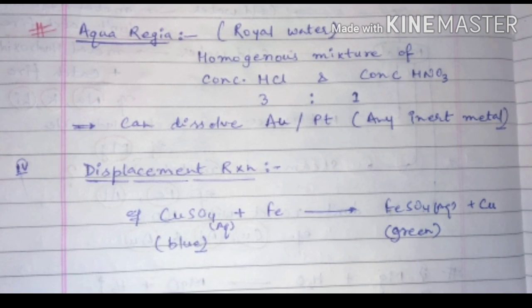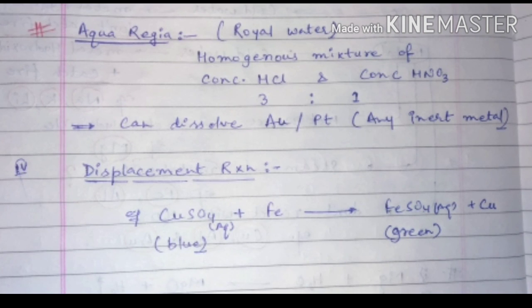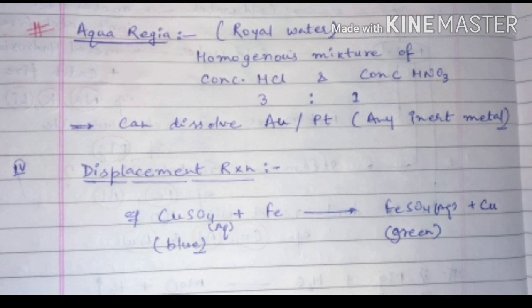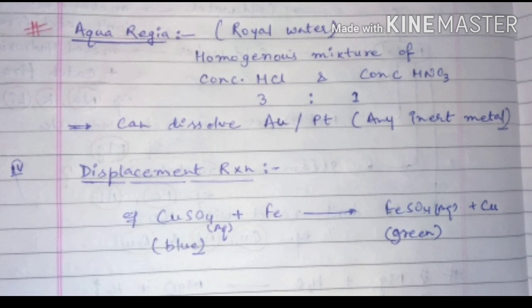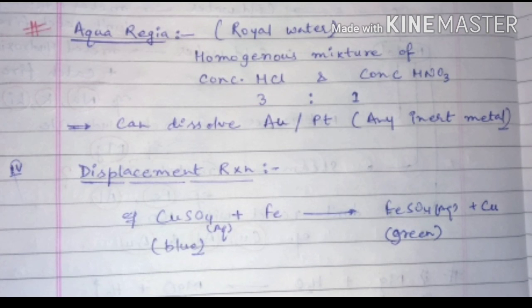Displacement reaction was discussed in chapter one. For example, an aqueous solution of copper sulfate reacts with iron and forms iron sulfate plus copper. This covers all the topics in this video — thank you.